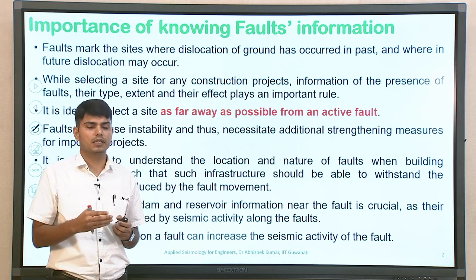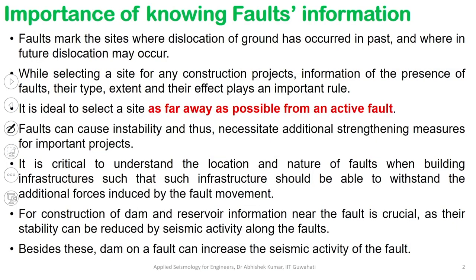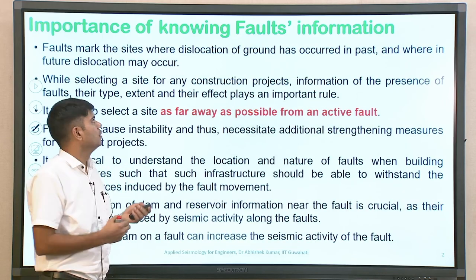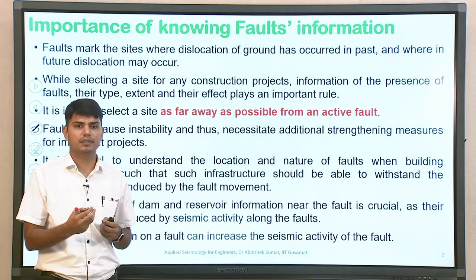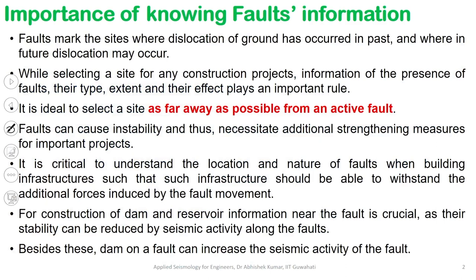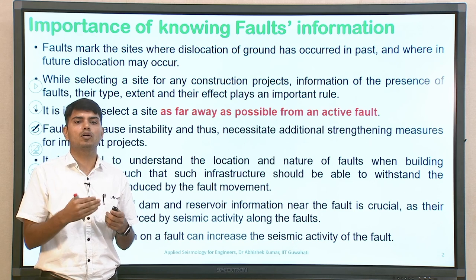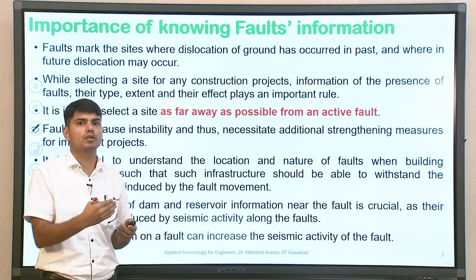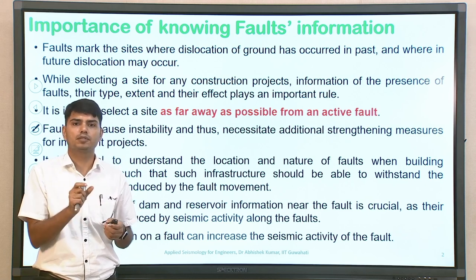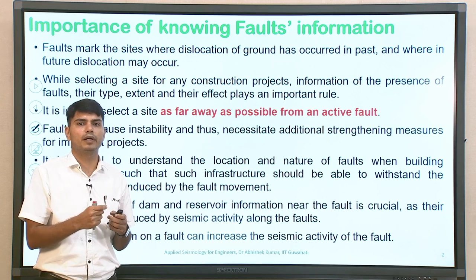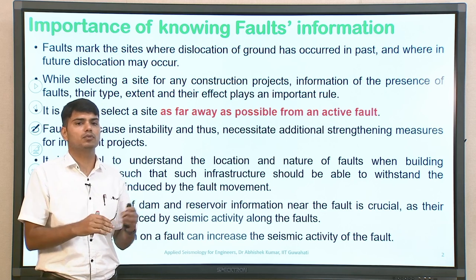Faults mark the sites where dislocation of the ground has occurred — the ground was initially level, but some kind of disturbance in the vertical or horizontal direction has occurred because of earthquakes in the past and can be repeated in the near future. These possible dislocations are an indication that some kind of movement has been happening in a particular section, which you can call a fault.